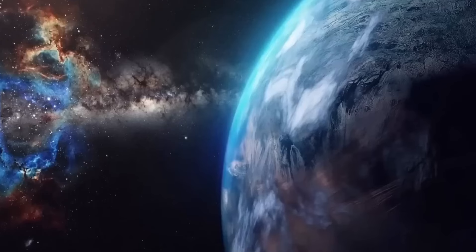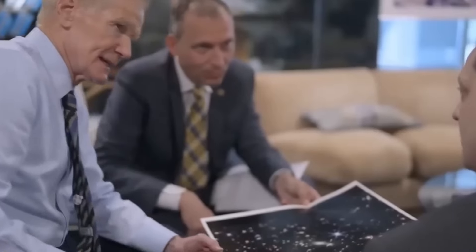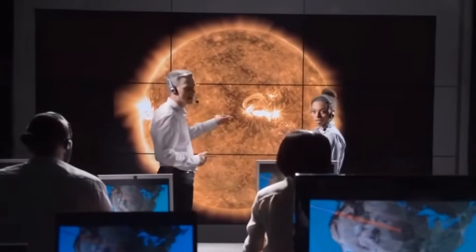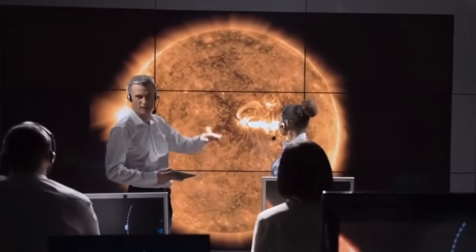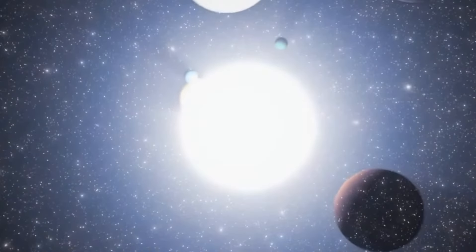Now, let's delve into what we know about WASP-96b. This gas giant, discovered by the Wide-Angle Search for Planets project, is nearly half the mass of Jupiter and orbits its host star, WASP-96, in a mere three to four Earth days.